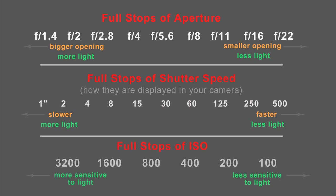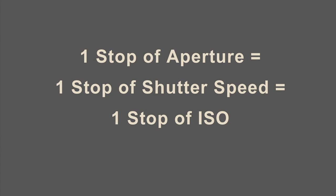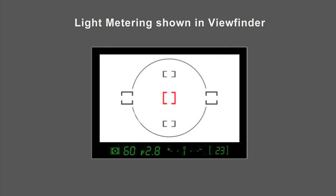For aperture, shutter speed, and ISO, that's why 1 stop of aperture equals 1 stop of shutter speed and equals 1 stop of ISO. But how do we actually know which aperture, shutter speed, or ISO to use? Every camera has a built-in light meter and it meters the intensity of light which gets into the camera, reflected from the subject you are taking a picture of. There are different methods of metering and we will talk about that in a separate lesson. If you look through your viewfinder, you will see the light metering indicator — a zero in the middle, plus on your left and minus on your right.